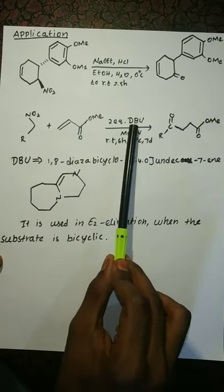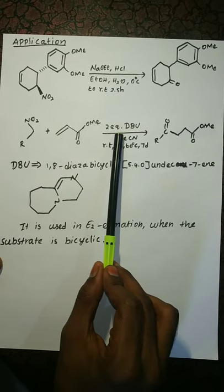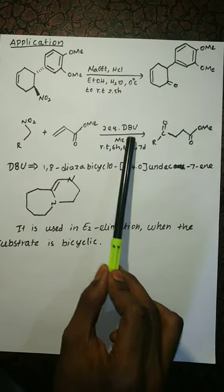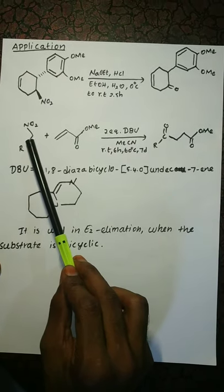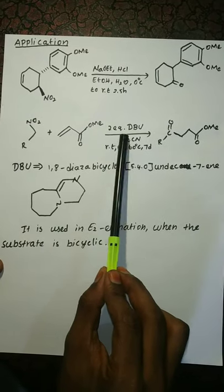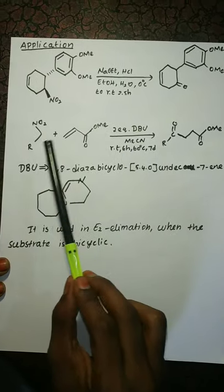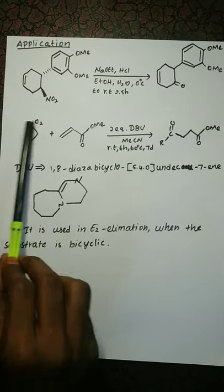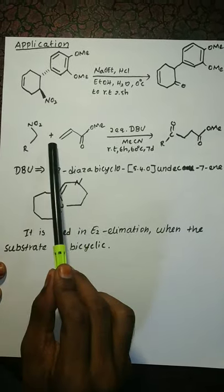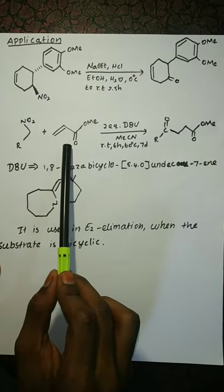This is DBU — this is the base. If we use the nitro group, we use the ketone group. This is an equivalent of DBU as the base. We use the carbonyl group. Acid catalysts remove the acid.